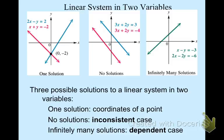Looking at linear systems in two variables and the three scenarios — one solution, no solution, and infinitely many — when there is one solution, you will be asked to name it and choose a method: graphing, substituting, or eliminating. If there is no solution or infinitely many solutions, there's no need to use any of the three methods. Today's lesson is helpful because before you solve any system, you want to know if there's any need to do the work.